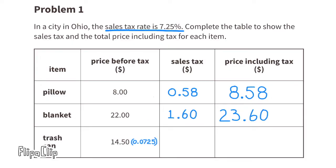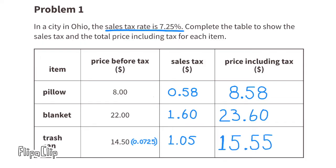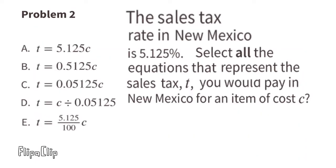For the trash can: $14.50 times 0.0725 equals a sales tax of $1.05125, which rounds down to $1.05. Adding the price before tax plus the sales tax gives $15.55 — the total price including tax for the trash can.